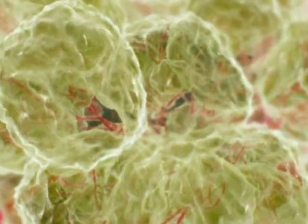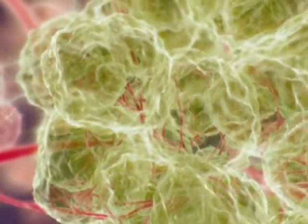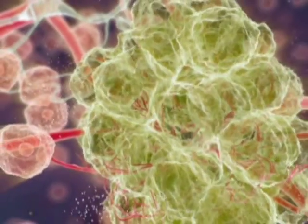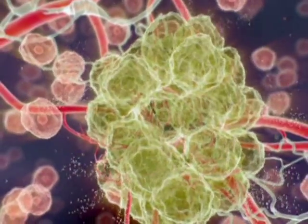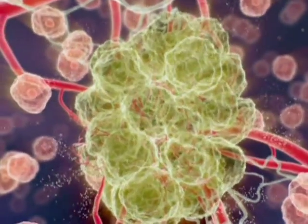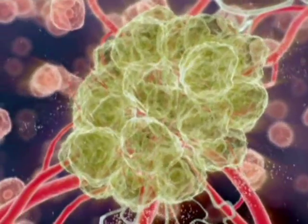The resulting new vessels that grow into the tumor are crooked and fragile with little smooth muscle support and are more permeable than normal blood vessels. As angiogenesis facilitates the tumor's ability to grow and spread, the inhibition of this process is a target for effective cancer therapy.